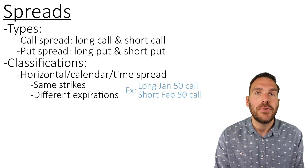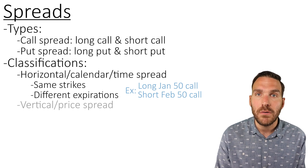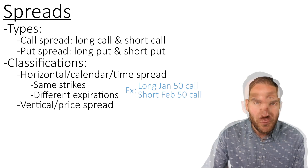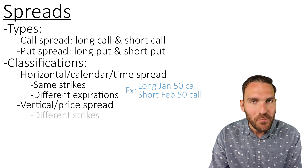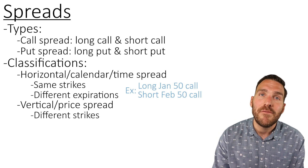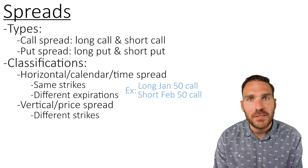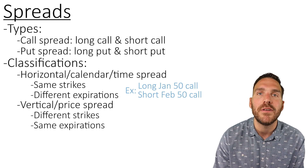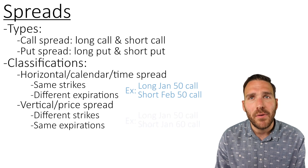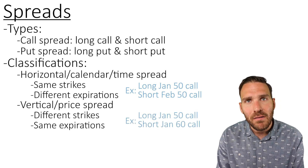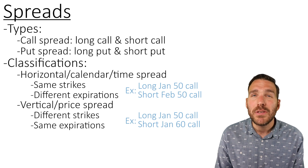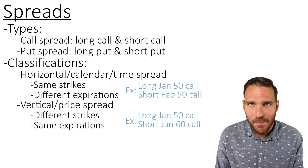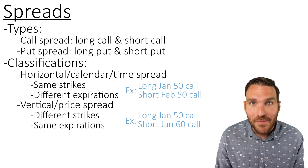The next classification has two names: vertical, also known as a price spread. As the term price spread might indicate, we're going to see a difference between the strike prices. A vertical, also known as a price spread, is where we see the same expirations across both options but different strike prices. For example, a long Jan 50 call and a short Jan 60 call. Most of your spread questions on the exam will actually be vertical, aka price spreads, so get used to these.